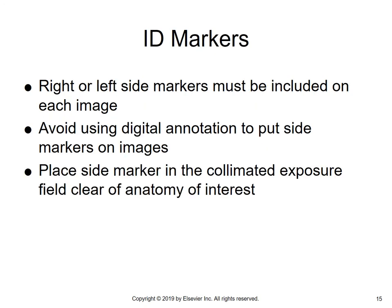For ID markers, we always use a right or left side marker, and it must be included on each image. It is strongly recommended that you avoid using digital annotation to put side markers on images — you should be using your own markers for identification. Always place the side marker in the collimated exposure field but clear of the anatomy of interest. You never want to put your marker over any anatomy.